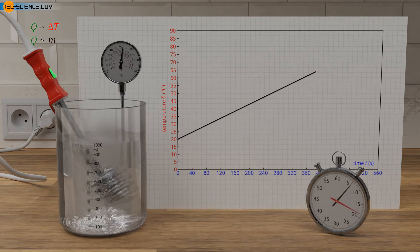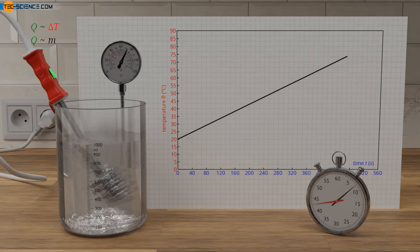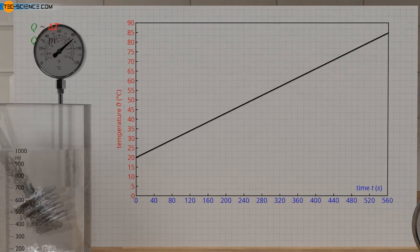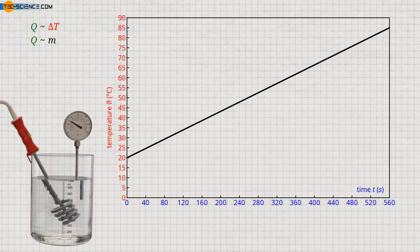While we can determine the mass to be heated with a balance and measure the temperature change with a thermometer, we must first think about how to determine the supplied amount of heat. After all, we want to examine which heat energy led to which temperature change and not after which time which temperature change was achieved. This is actually easier than one might expect.